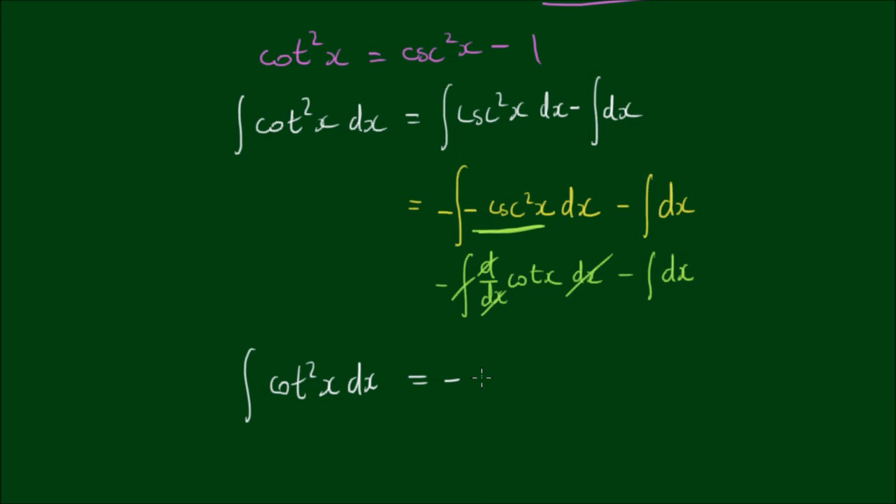So this leaves me with the result that the integral of the cotangent squared of x is equal to the negative of the cotangent of x minus x since the integral and the d cancels out. And since this is an indefinite integral, I also include an integration constant on the end.